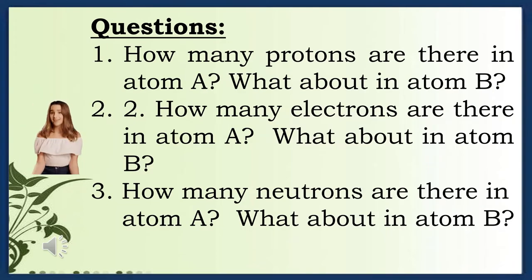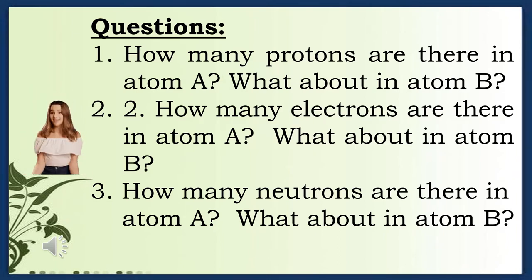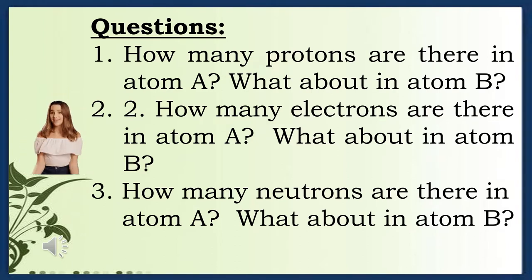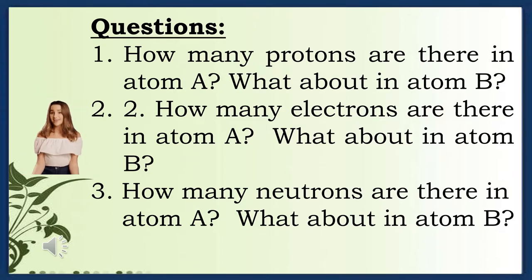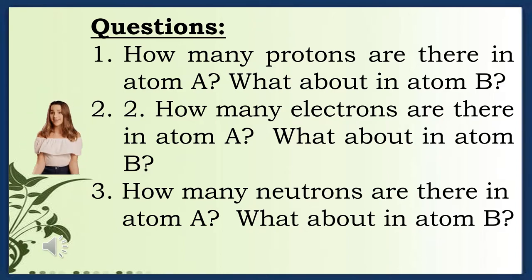Question 1: How many protons are there in atom A and atom B? There is only one proton in atom A, while in atom B there are four protons. Question 2: How many electrons are there in atom A and atom B? There is one electron in atom A, while in atom B there are two electrons. Question 3: How many neutrons are there in atom A and atom B? There is no neutron in atom A, while there are five neutrons in atom B.